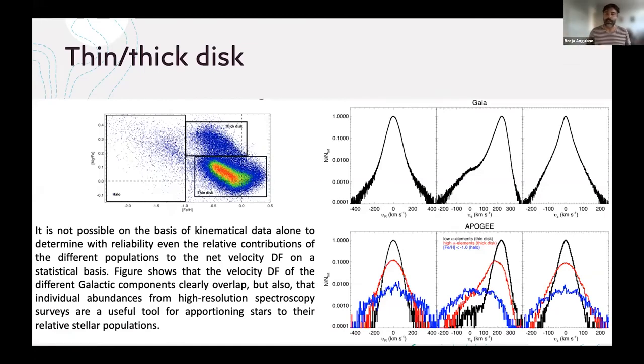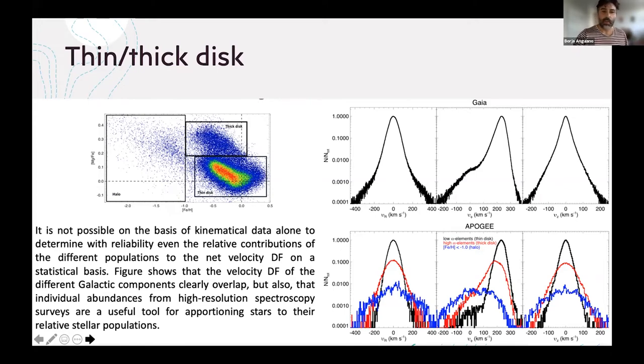But we have all these amazing surveys like LAMOST and APOGEE, and we can use the alphas to separate the kinematics. This is what I'm showing here. You can see the velocity distribution for the thin and thick disk and the halo. They overlap. The velocity overlaps.